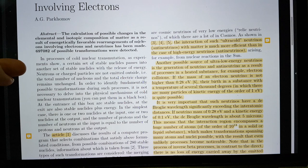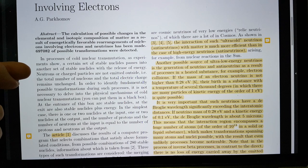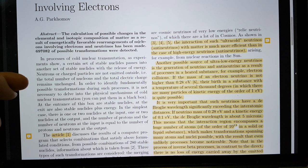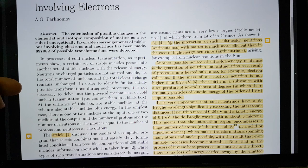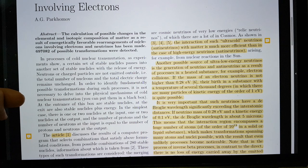In processes of cold nuclear transmutation, as experiments show, a certain set of stable nuclides passes into another set of stable nuclides with the release of energy. Neutrons or charged particles are not emitted outside - the total number of nucleons and the total electric charge remains unchanged. In order to identify fundamentally possible transmutations during such processes, it is not necessary to delve into the physical mechanisms of cold nuclear transmutation.